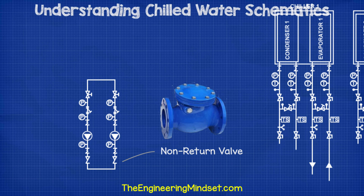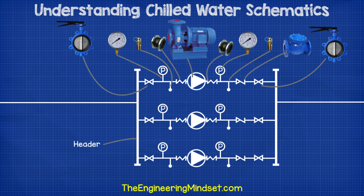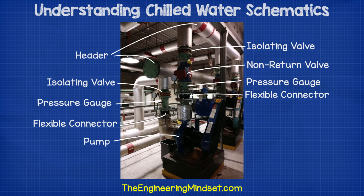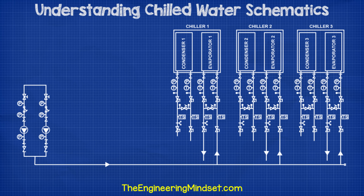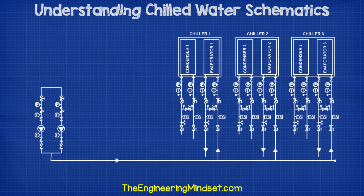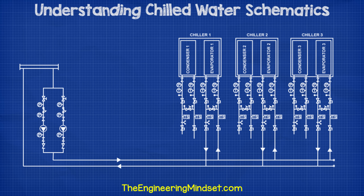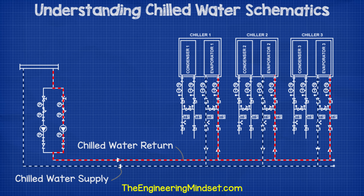Notice that this design doesn't have a second isolating valve past the non-return valve, but in newer systems you will usually find there is one. In the real world, it will look something like this, and this is for a centrifugal pump set. We know the pumps need to push water through the chiller, so we can connect the pump sets to the chiller's evaporator inlets. Chilled water is generated in the evaporator, so we'll need to connect that back around to the pumps to create a circuit which will distribute the chilled water.